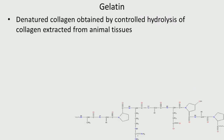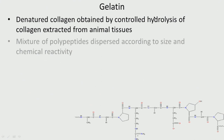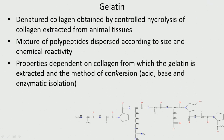Next comes gelatin, which is derived from collagen. It is a denatured collagen obtained by the controlled hydrolysis of collagen extracted from animal tissues. Gelatin is much safer than collagen because it undergoes a chemical transformation — a hydrolysis reaction. Unlike collagen's triple helix, gelatin is linear in nature — a linear mixture of polypeptides dispersed according to size and chemical reactivity, so we can have polypeptides of different chain lengths. The properties depend on the collagen source and the method of conversion, whether hydrolysis with acid, base, or enzyme.